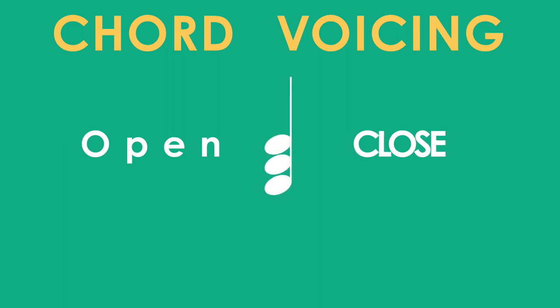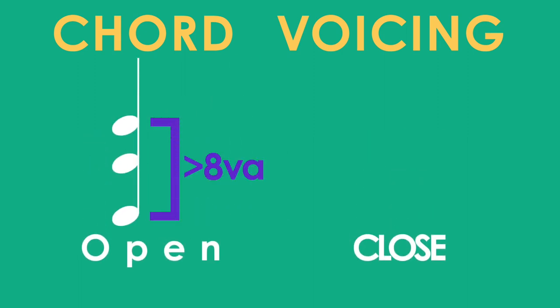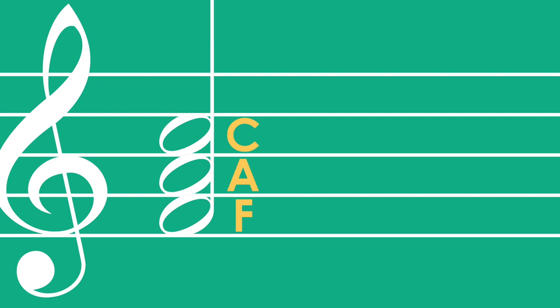The main difference between open and close chords is the literal space between the notes on the staff. The rule of thumb is that a chord that has notes more than an octave apart is an open chord. This means that chords with notes less than an octave apart — for example, this chord, F-A-C — is a closed chord because all of the notes fit within one octave.